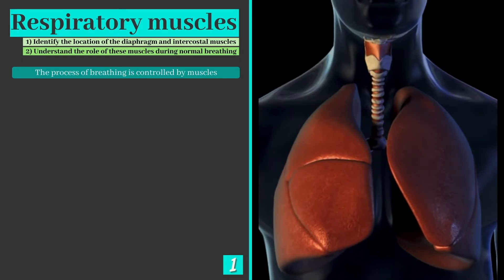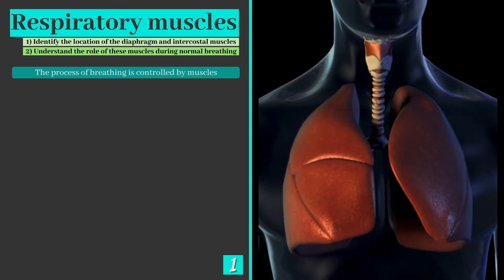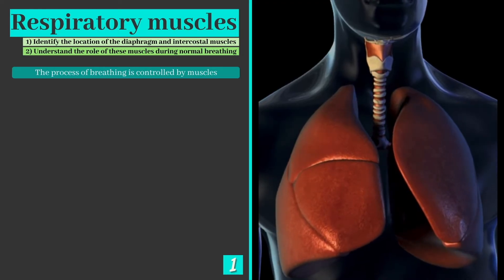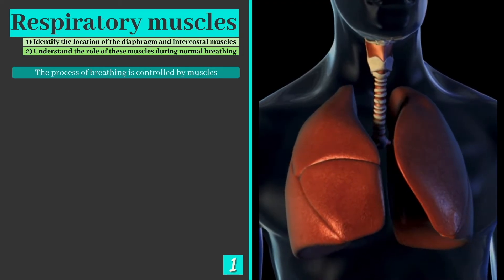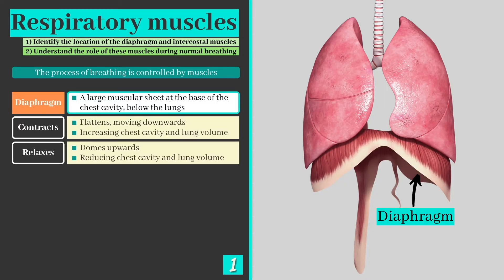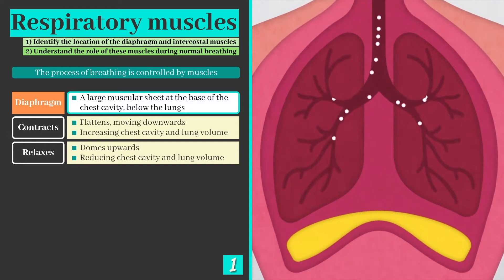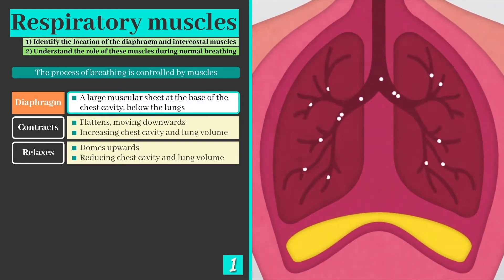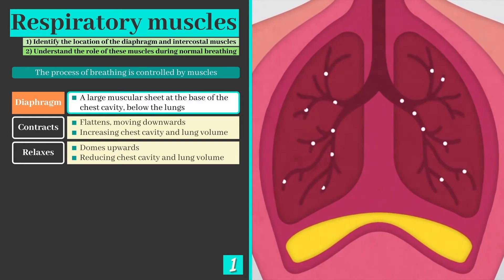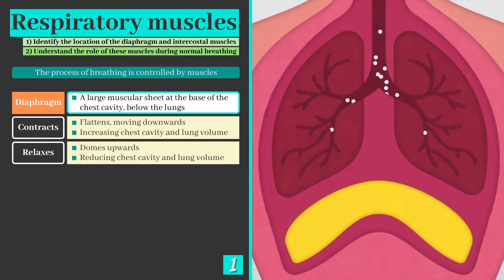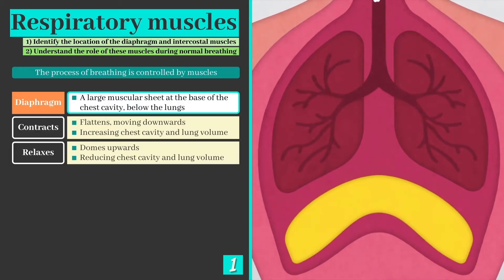These muscles contract or relax, forcing air to move into or out of the lungs. We'll take a look at the diaphragm first, which is a large muscular sheet that can be found at the base of the chest cavity, just below the lungs. It flattens, moving downwards as it contracts, and domes upwards as it relaxes, changing the volume of the chest cavity.